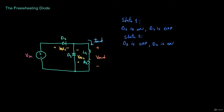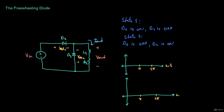Let's draw the input voltage and the output voltage and current to see how the circuit works. The input voltage is a sinusoid. For state 1, D1 is on and D2 is off, so the output voltage looks just like the input voltage. For state 2, D2 is on so Vout is short-circuited, meaning the voltage is 0. Notice that we fixed the issue from the previous example where Vout was going negative — now it's just positive, zero, and positive again, just like the example with the resistive load.